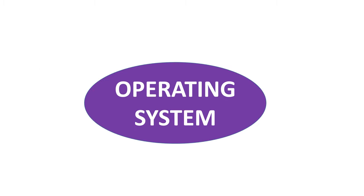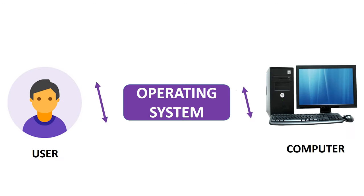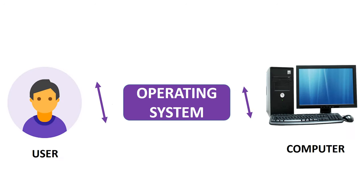Operating system. An operating system is a software that acts as an interface between the user and the computer system.